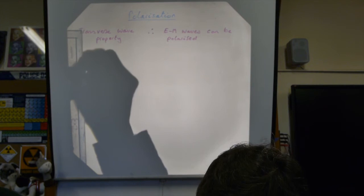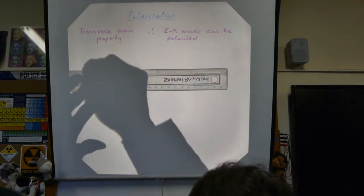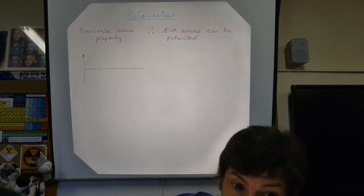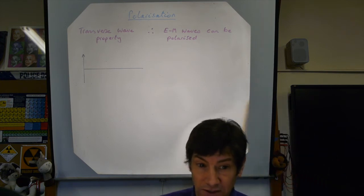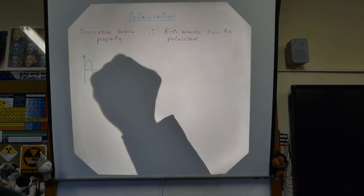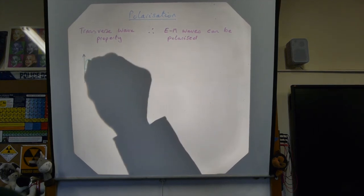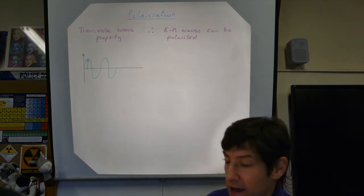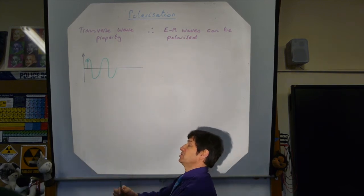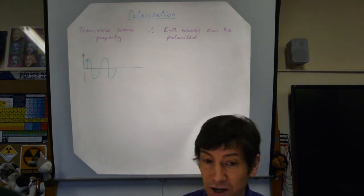I'm going to draw an electromagnetic wave again, but this time I'm just going to draw the electric vector. The way I've drawn this wave, it only seems to oscillate up and down. So if this was the electric field, the electric field is only oscillating up and down. As we look at it coming towards us, we would theoretically see the electric field varying in this direction — it's vertically polarised.